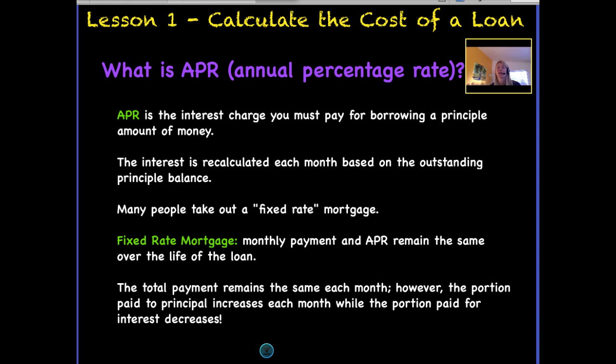The APR is the interest charge you must pay for borrowing that principal amount of money. Banks won't just give you that money and tell you to pay it back over time; they want to earn money themselves. So obviously, the lower interest charge you can secure, the better. Interest is recalculated each month based on your outstanding balance. Each month you make a payment that pays some principal down, but also includes interest.